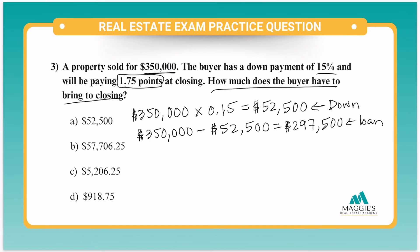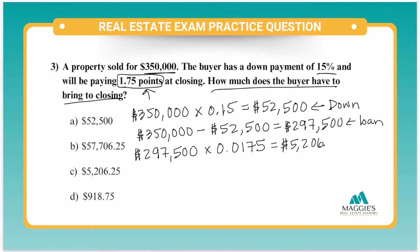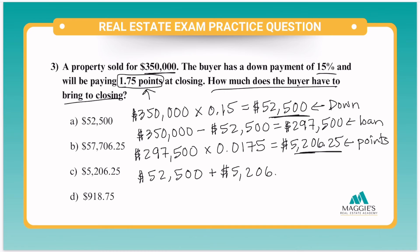Now that we have the loan amount, let's apply the points. So $297,500 times 0.0175. That'll give us a total of $5,206.25 that has to be paid for the points. Now all we have to do is add the down payment plus what they have to pay for points to get the total the buyer has to bring to closing. So $52,500 plus $5,206.25 is going to equal $57,706.25. So the answer to this one is B.